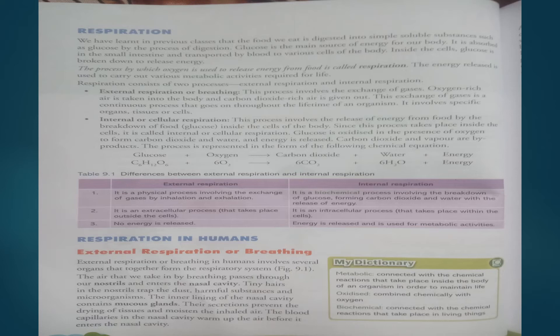Respiration consists of two processes. One is external respiration, or breathing. The other is internal respiration, or cellular respiration. External respiration is the process involving exchange of gases: oxygen-rich air is taken into the body and carbon dioxide-rich air is given out. This exchange of gases is a continuous process that goes on throughout the lifetime of an organism, and it involves specific organs, tissues, or cells.